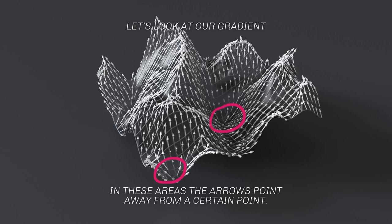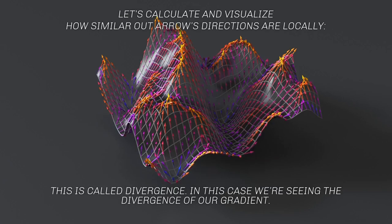If we calculate how similar the arrows' directions are locally around a given point, we get the divergence. In valleys, divergence is negative — arrows pointing outward. On hillsides, divergence is nearly zero. At peaks, divergence is strongly positive — all surrounding arrows point toward that point. So we first calculated the gradient and then the divergence of the gradient — the second derivative of our original function.